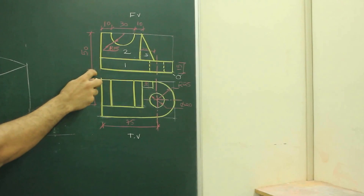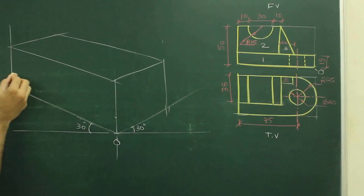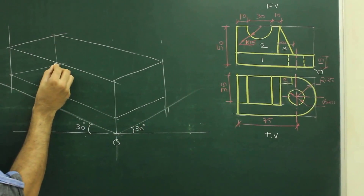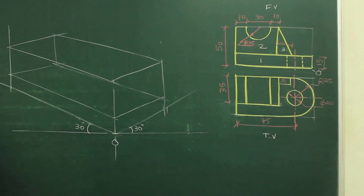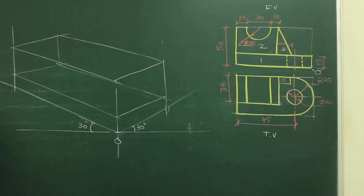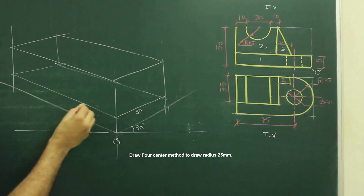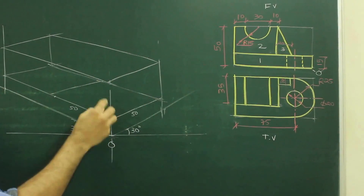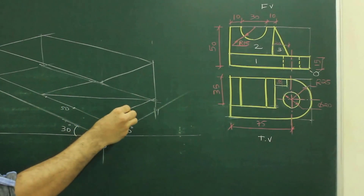So first we will draw part 1 — height is 15. So we'll take 15. After that, we need to draw radius 25. So for radius 25, we need to have a rhombus of 50. So we'll mark 50, 50 and we'll draw rhombus 50. After that, draw a long-diagonal, mark midpoint, midpoint.